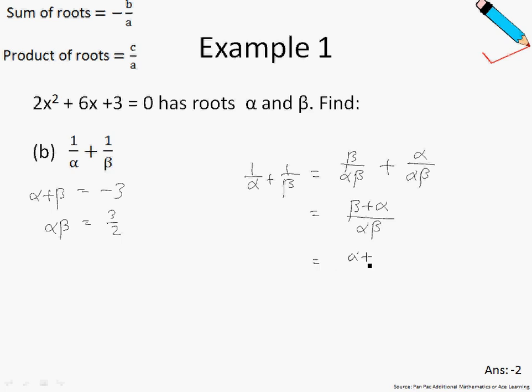So this will give me (β+α)/αβ, and this is similar to (α+β)/αβ. So at this point in time, I can substitute in the values that I found earlier. So α+β is just -3, and αβ is just 3/2. Simplifying this with the help of a calculator, I'll just arrive at the final answer, which is -2.